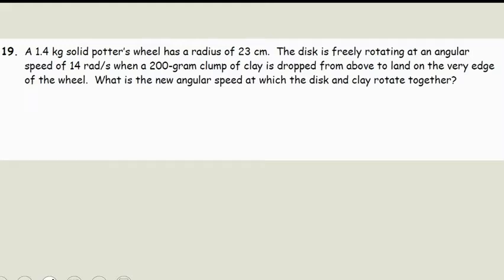So in this question, we have a 1.4 kilogram solid potter's wheel with a radius of 23 centimeters. The disc is freely rotating at an angular speed of 14 radians per second when a 200 gram clump of clay is dropped from above to land on the very edge of the wheel. What is the new angular speed at which the disc and clay rotate together?